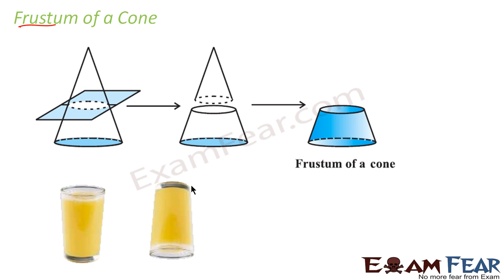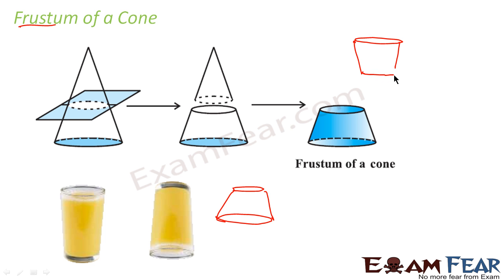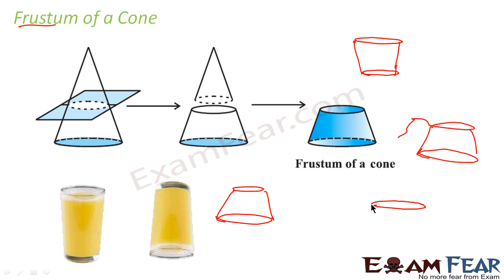Why do we need frustum? In real life, take a glass — if you invert it, it is nothing but a frustum. The bucket we use for filling water is also a frustum. A lot of vessels in our real life are in the form of frustum. Sometimes the cap a joker wears is also a frustum. Even a lamp in the house or a wire lampshade — there are so many figures in our real life that are in the form of frustum.